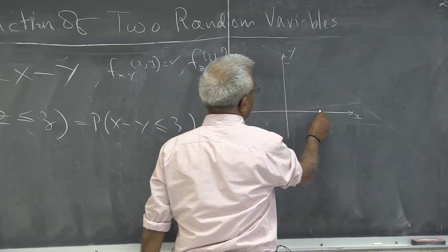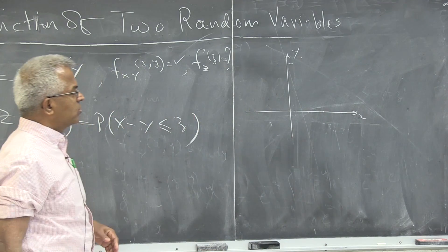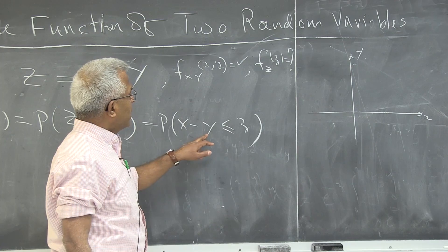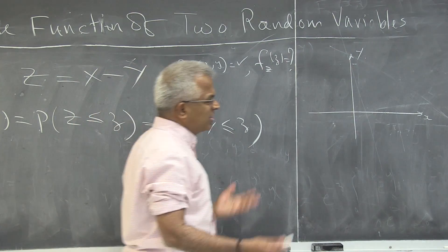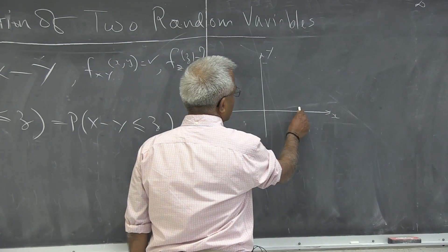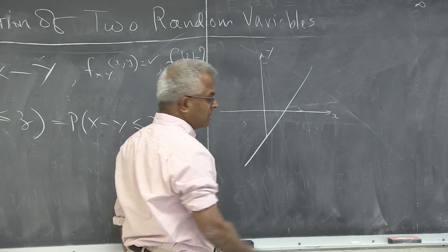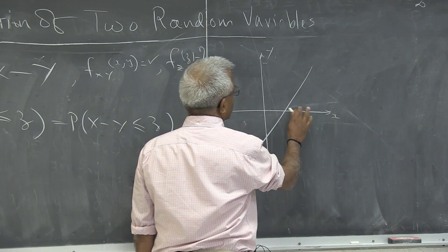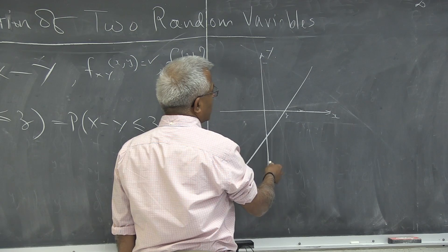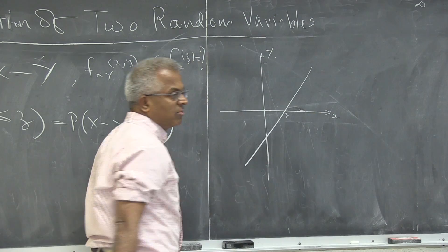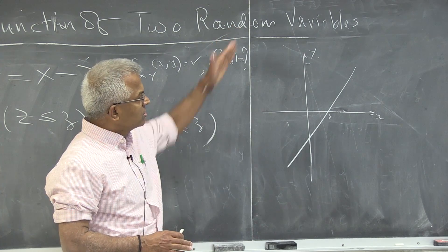So y equal to 0, x is here on the axis. When x is 0, y is minus z. So if z is positive, the other point would be here, and the line would go like this. This is for z positive. How will the line look if z is negative? It will just shift up.